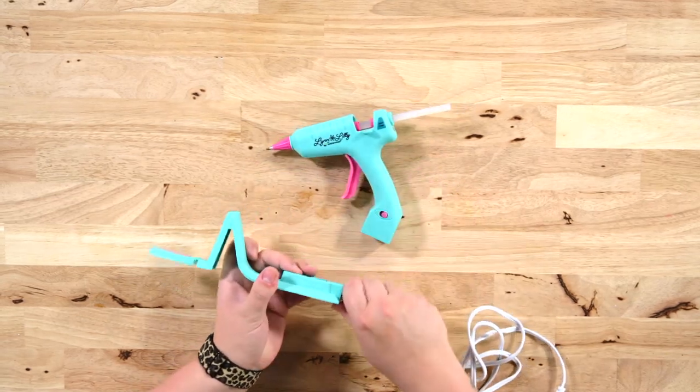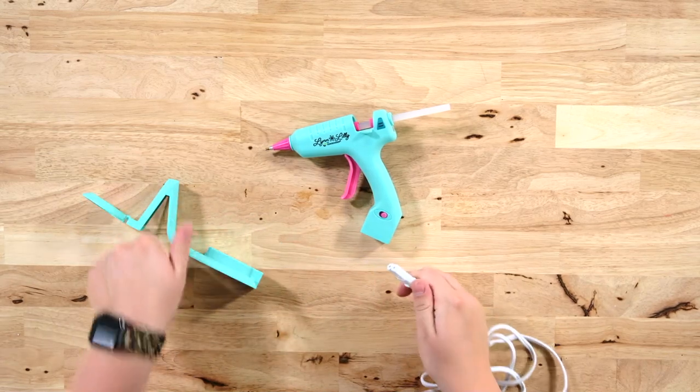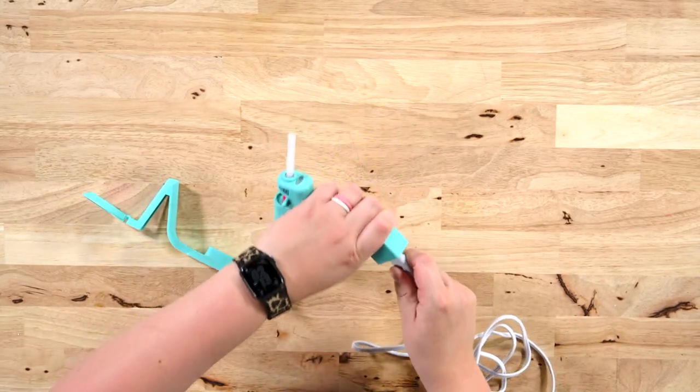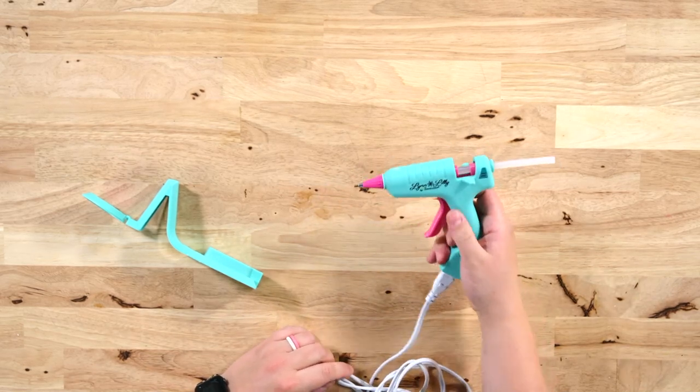Or you can unplug it from its base, unplug the cord from the base, and plug it directly into the bottom. And then you have a corded glue gun, which is amazing.